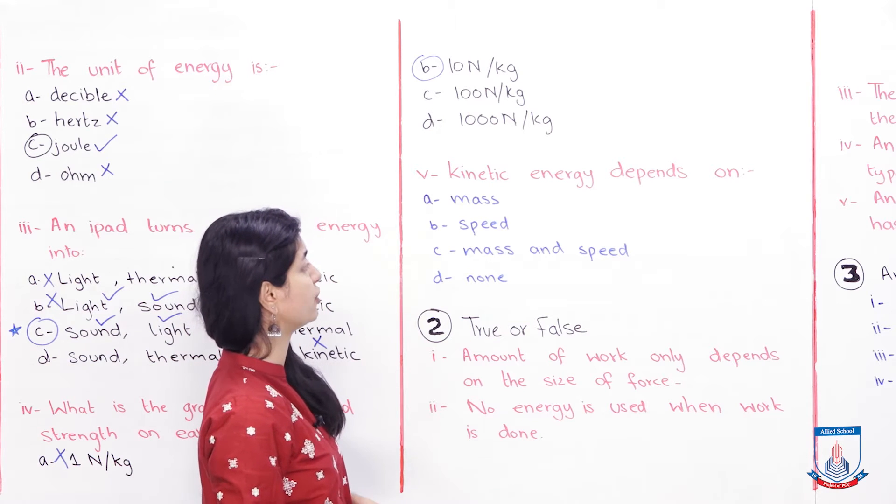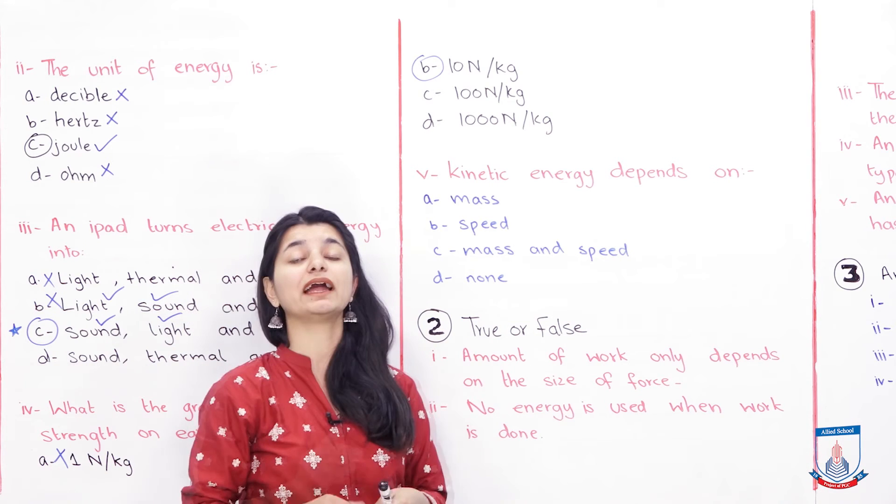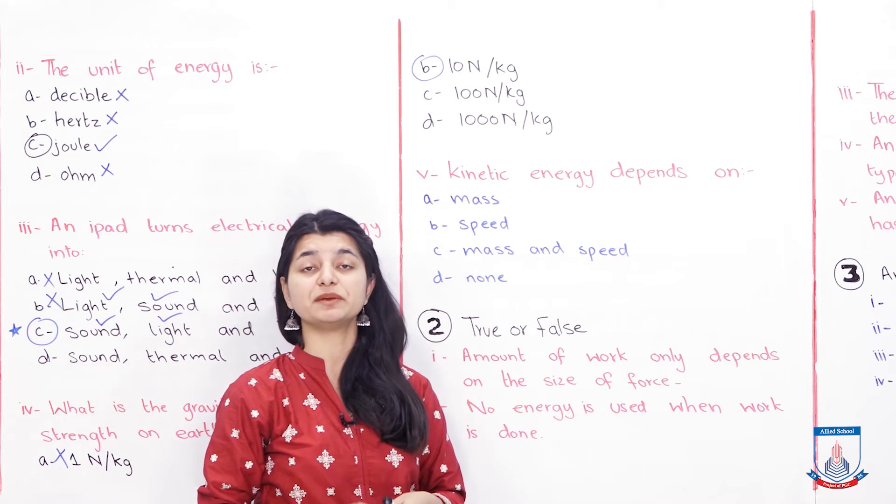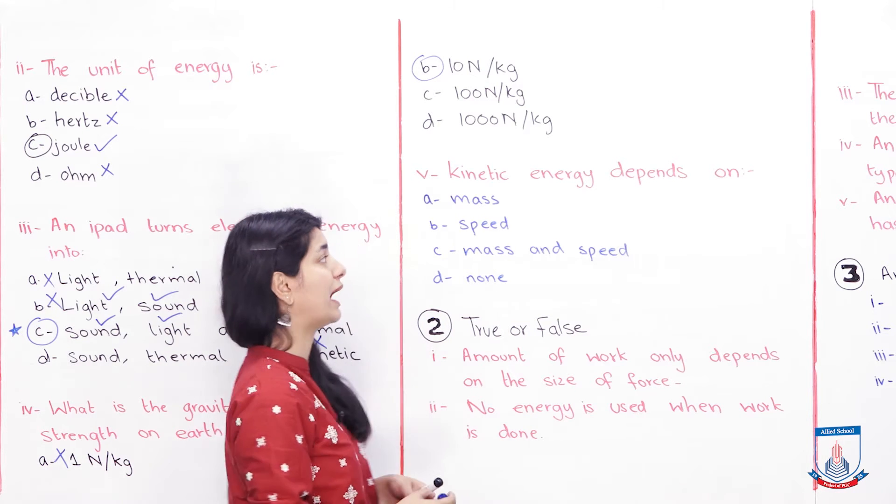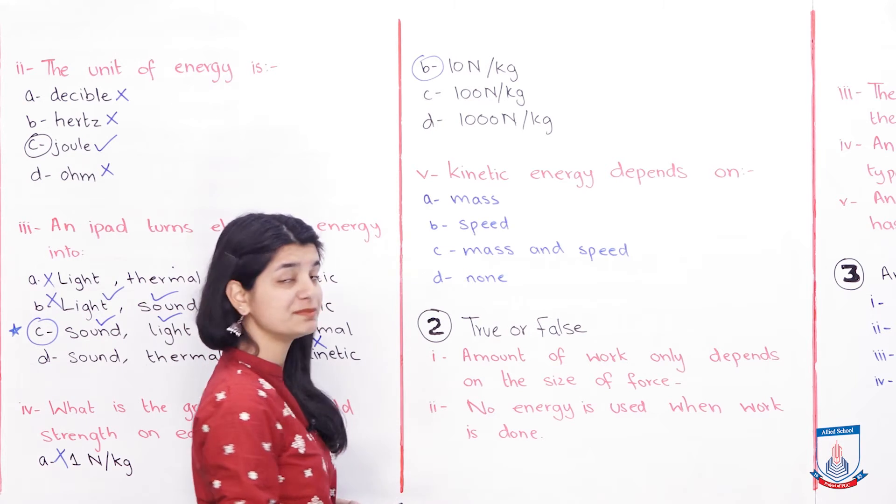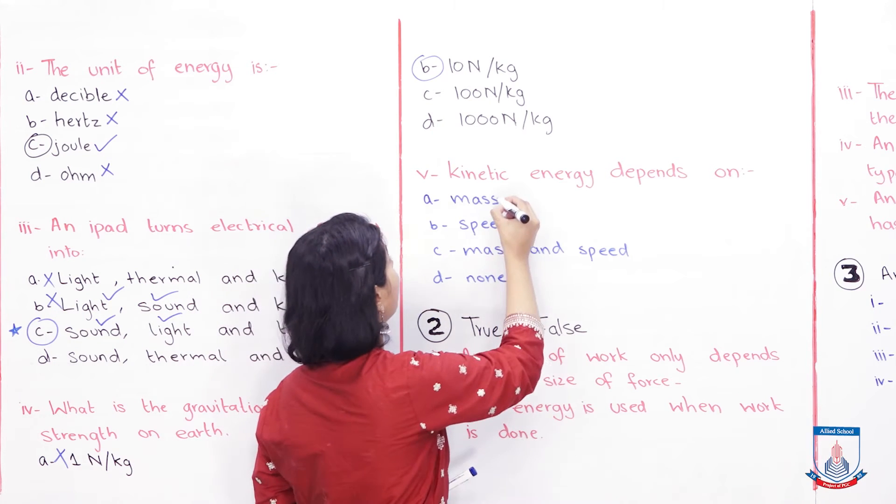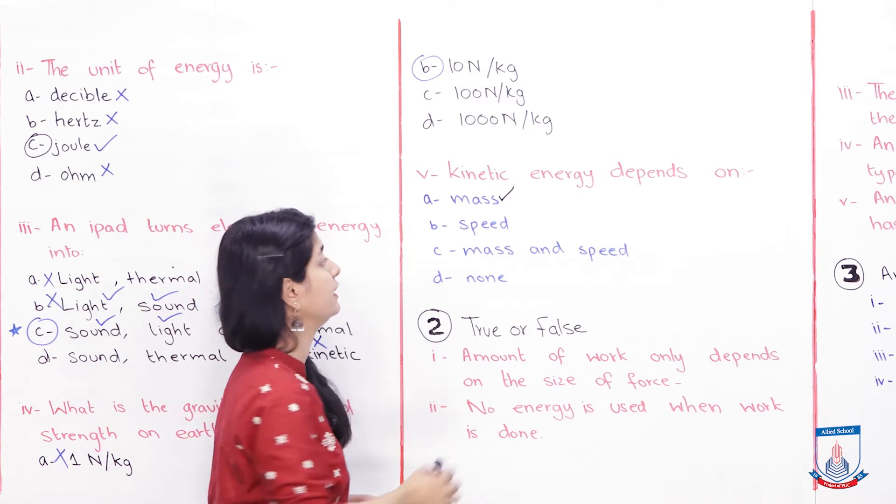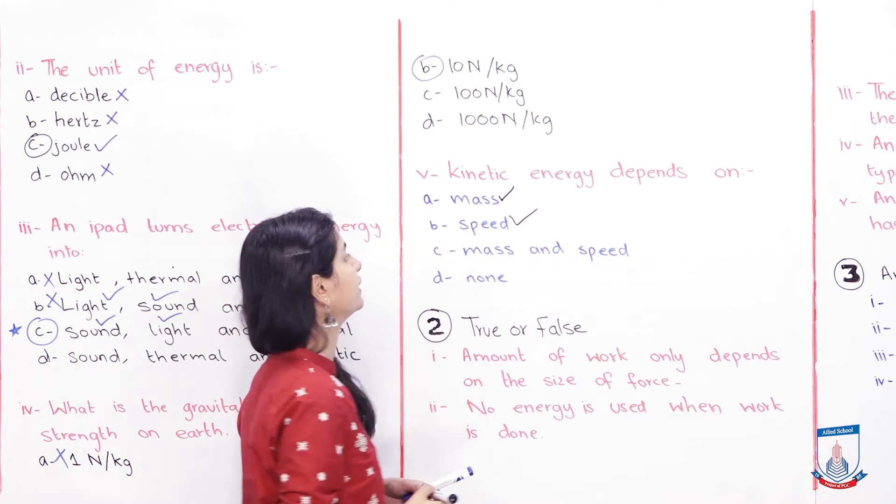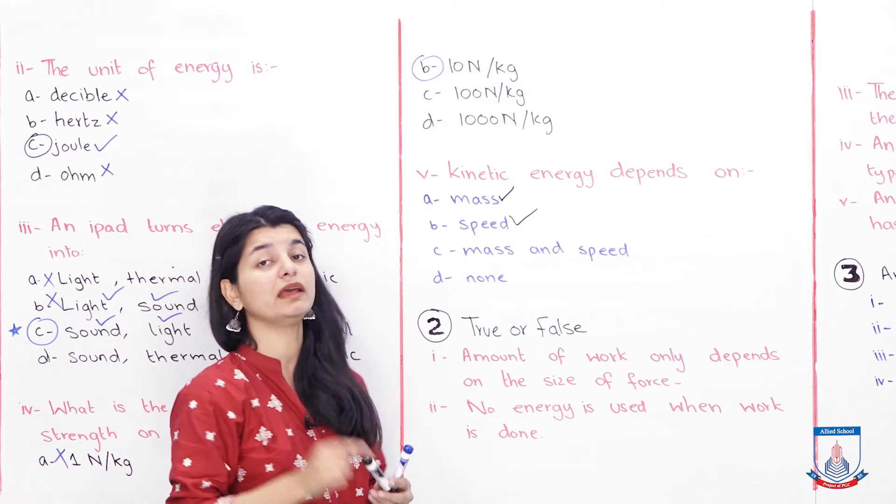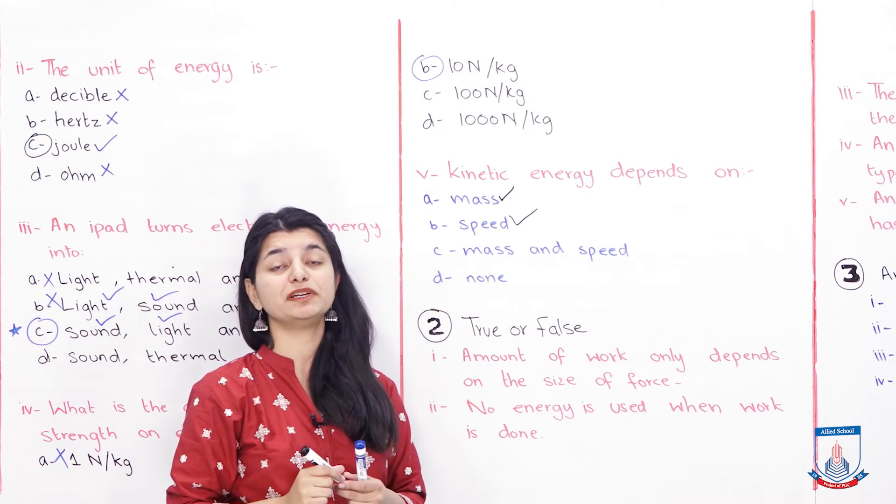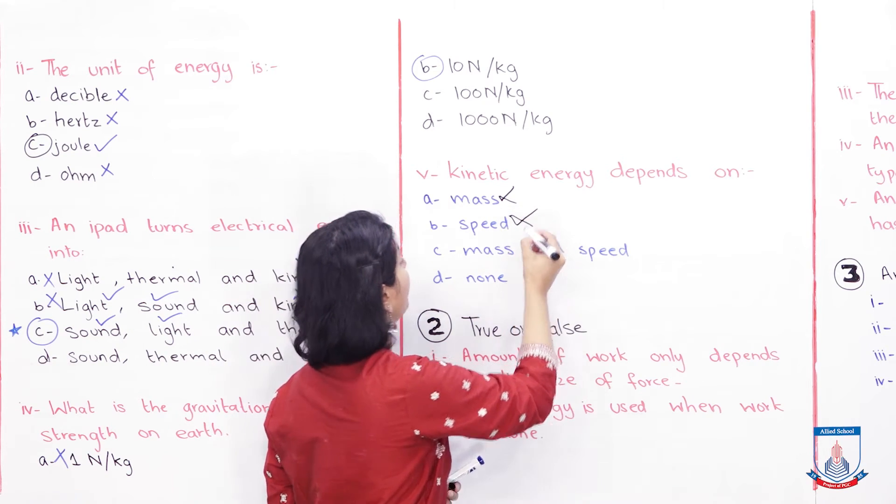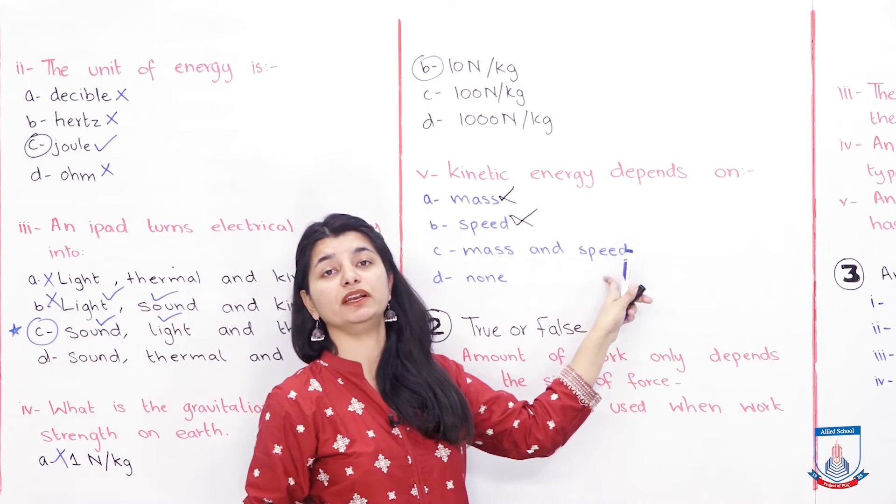Next is, kinetic energy depends on. Now the MCQ is demanding, what is kinetic energy depends on? And again, the answer to this is very simple and straightforward. Is it mass only? Does it depend on mass? It depends on mass. That's correct. Then does it depend on speed? Yes, it depends on speed too. Does it depend on mass only? No. Does it depend on speed only? No.